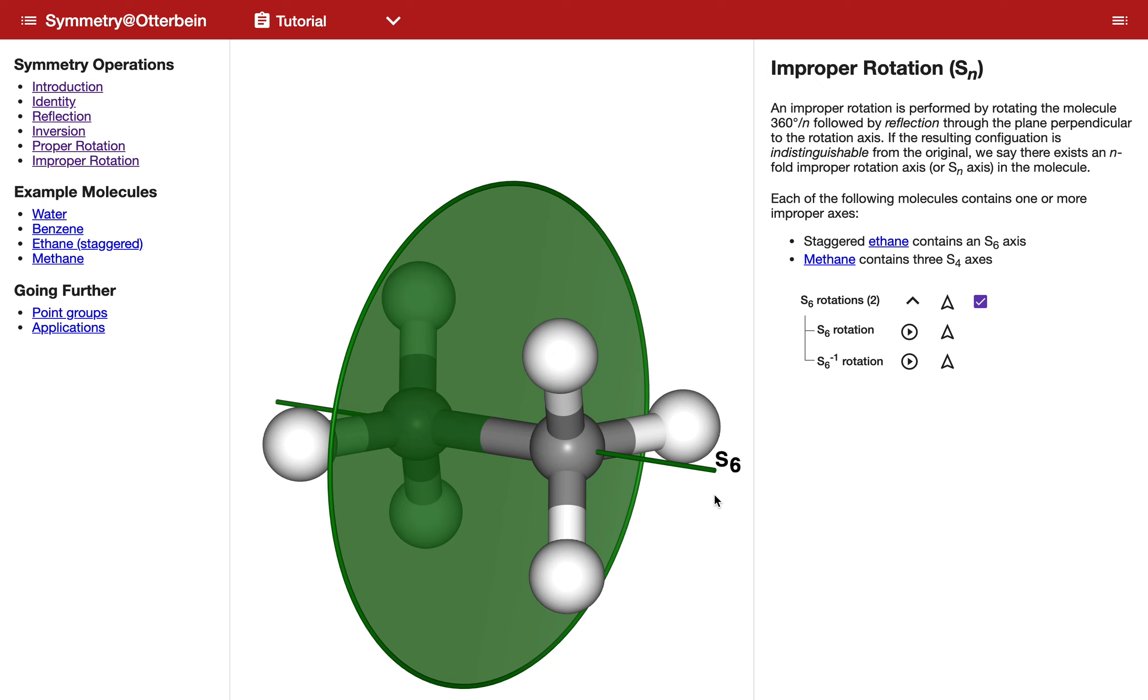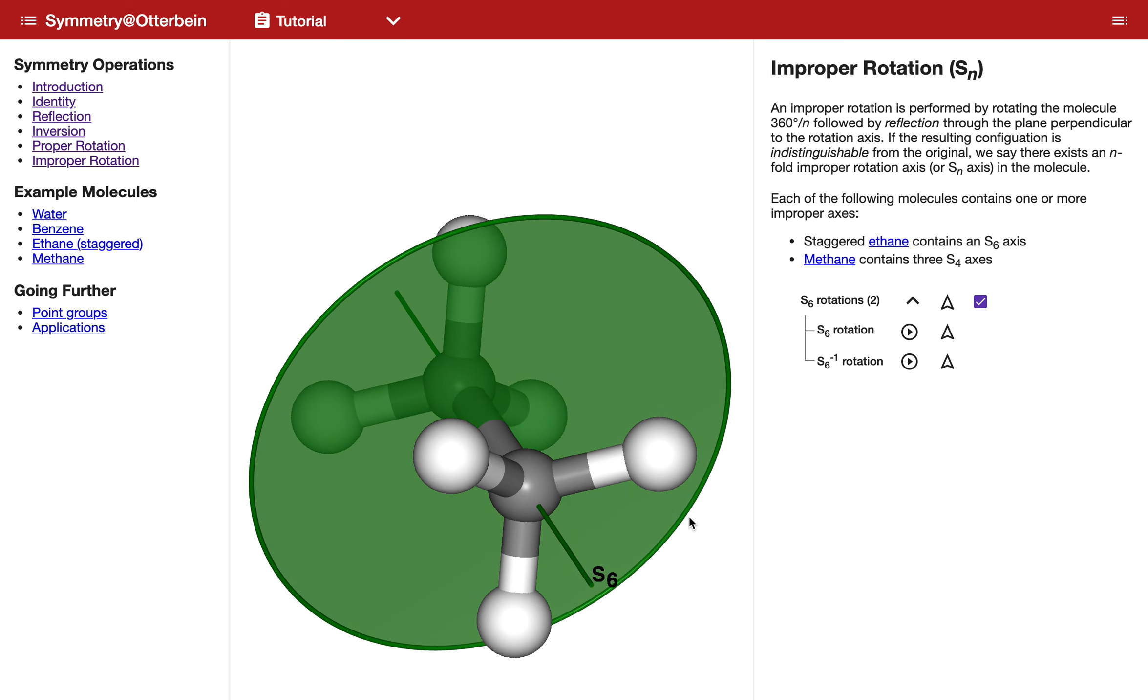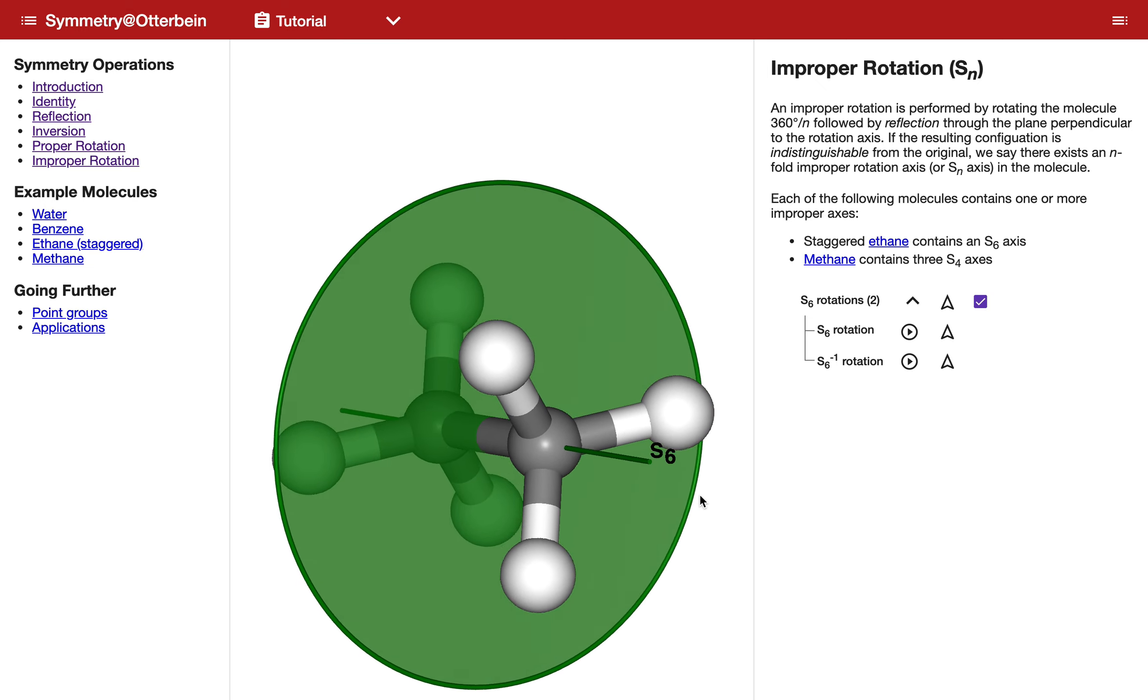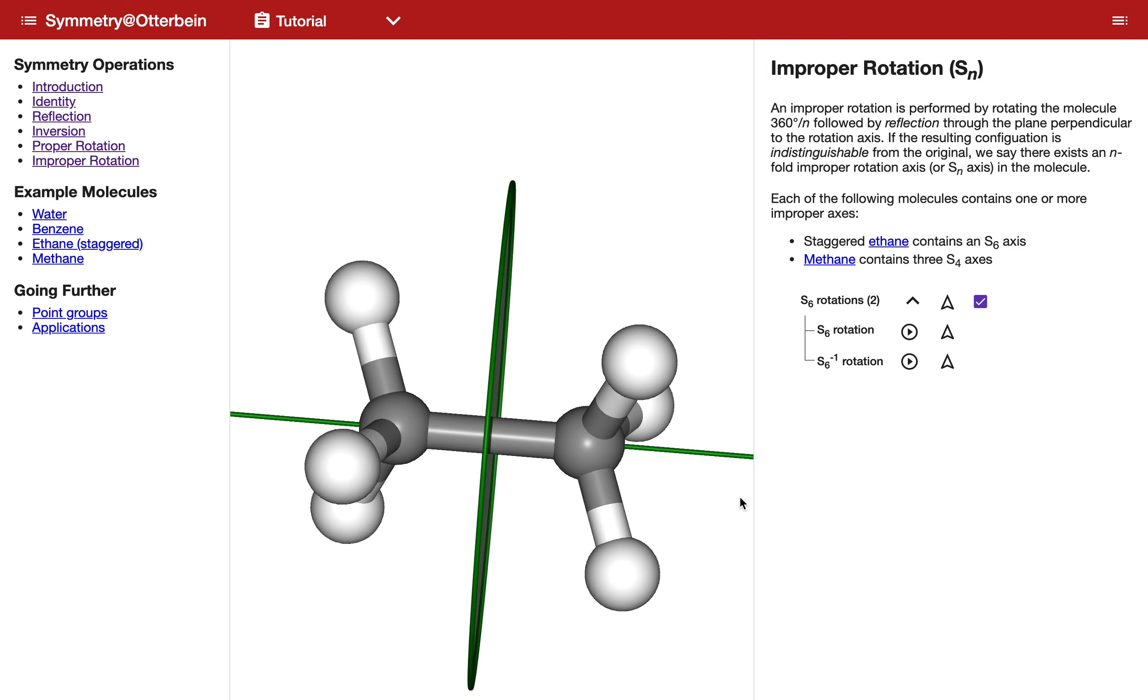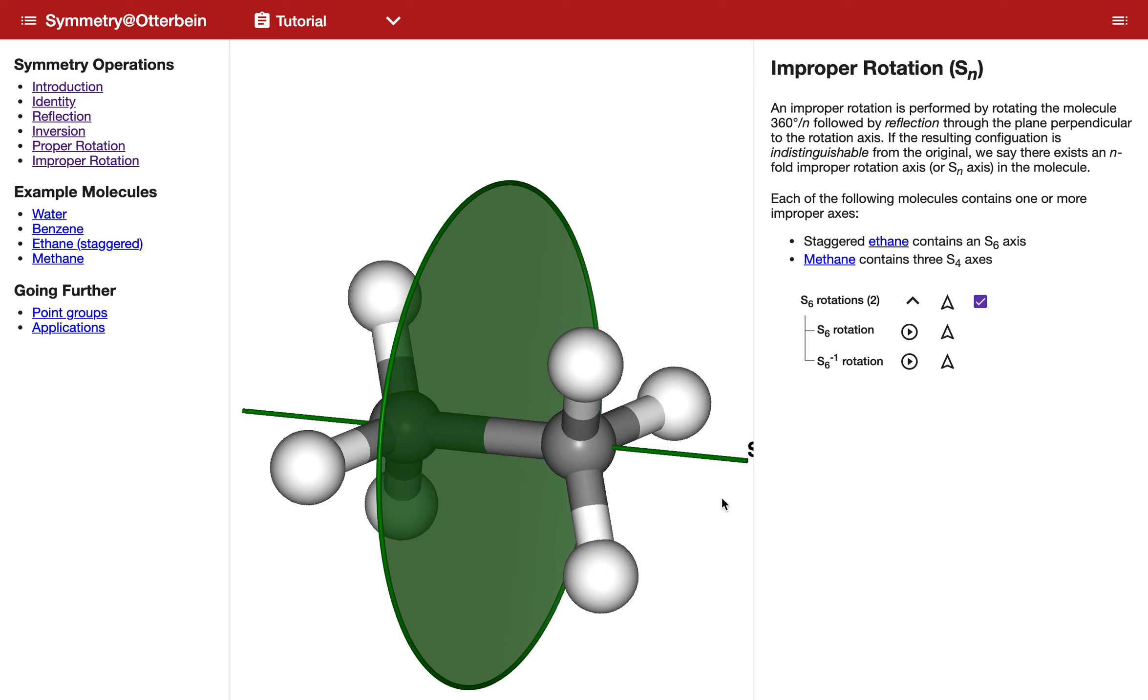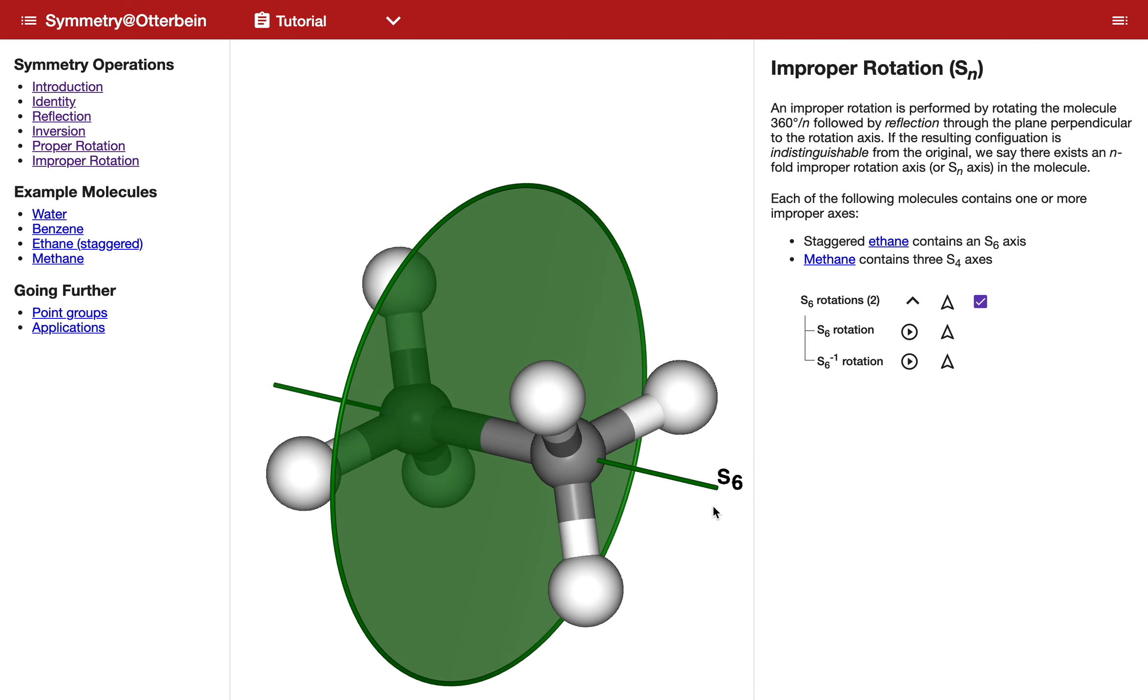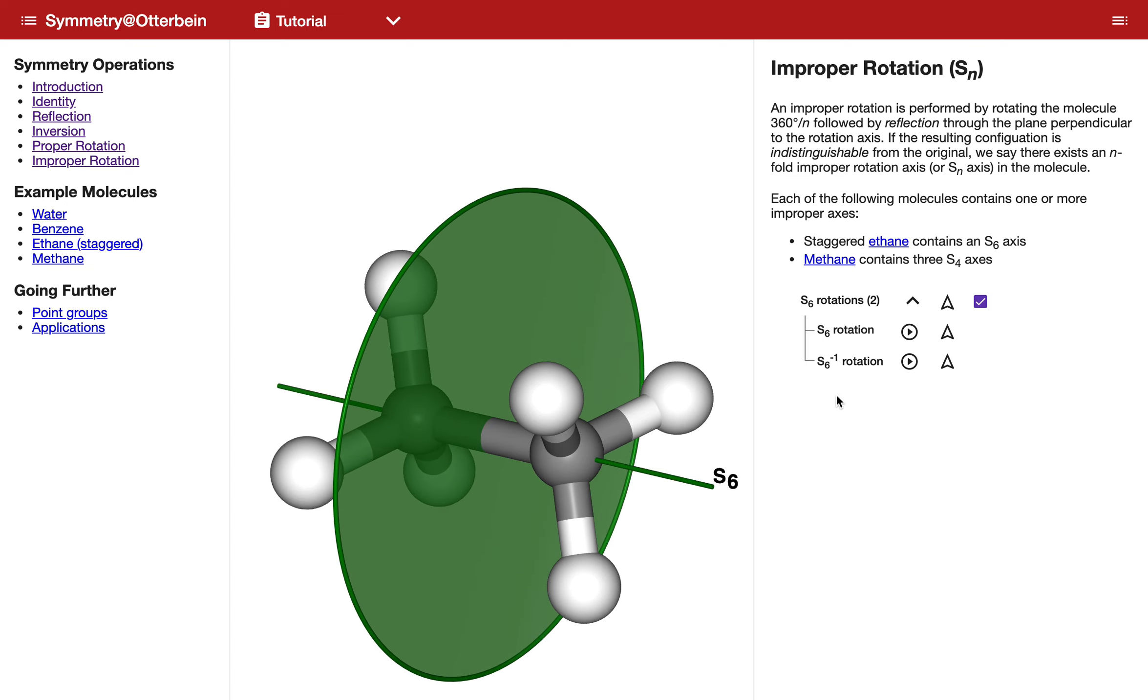Which is the rotation axis about the bond that links the two carbons, and then a plane that bisects that bond. And an improper rotation always involves a rotation followed by a reflection perpendicular to that rotation.